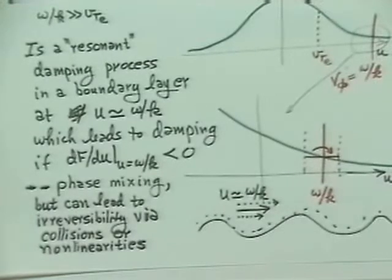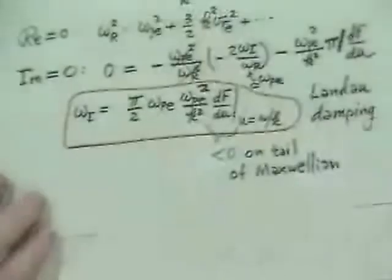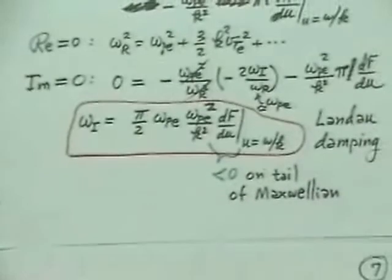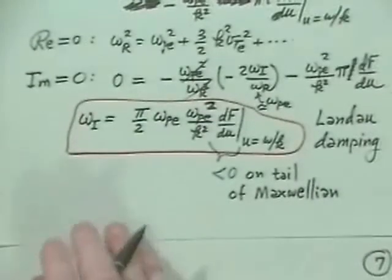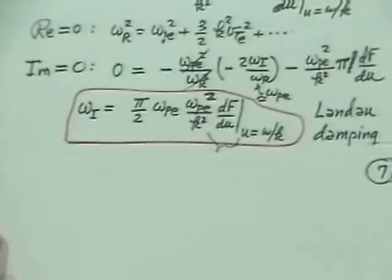So that's what Landau damping is all about — a wave-particle initial value interaction. Chen structures his chapter to tell you all the things it is not about, and I've tried to say what it is. Now we need to do a little more mathematics: find the imaginary part of omega and show that it is indeed small.